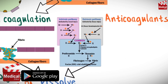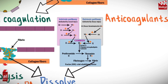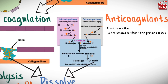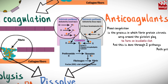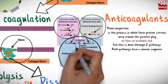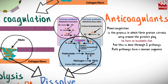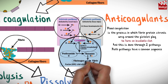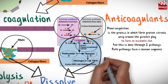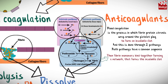We already know from the previous lectures what the coagulation cascade is, but we can summarize it. Blood coagulation is the process in which fibrin protein strands wrap around the platelet plug to form an insoluble clot. This is done through two pathways: intrinsic and extrinsic. Both pathways have a common sequence involving a complex that includes activated factor X, factor V, platelet phospholipids, and calcium, that catalyzes the conversion of prothrombin to thrombin. In turn, thrombin converts plasma fibrinogen to fibrin, and fibrin monomers bind together forming a network that forms the insoluble clot.